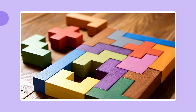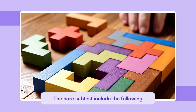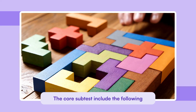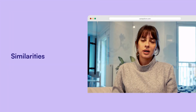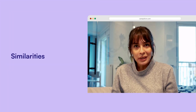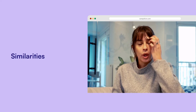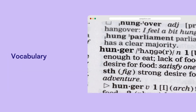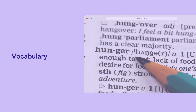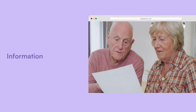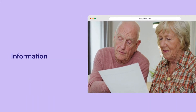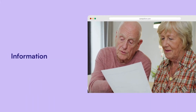The core subtests in the WAIS 4th edition include the following. Similarities measures verbal concept formation, abstract reasoning, and verbal expression. Vocabulary assesses word knowledge and verbal comprehension. Information evaluates acquired general knowledge and long-term memory.